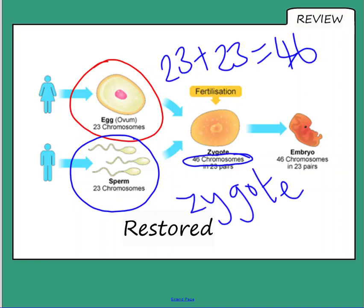And then from that one cell, dividing repeatedly by mitosis, which we've just explained, because it's growth, then you get an embryo. Every single cell in the embryo has 46 chromosomes.